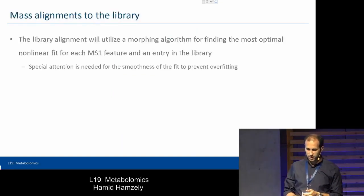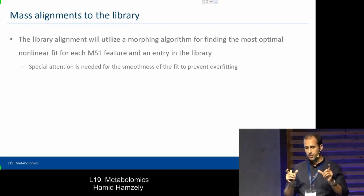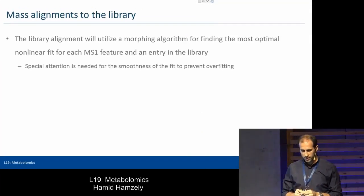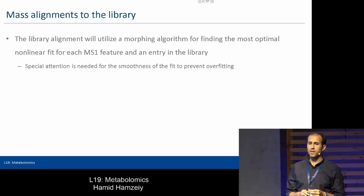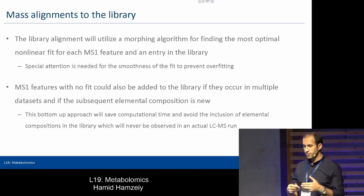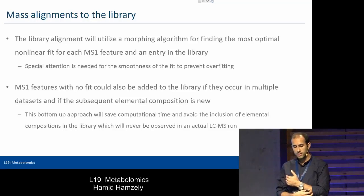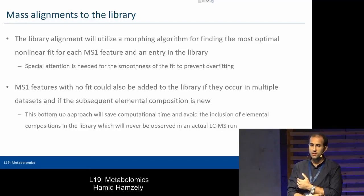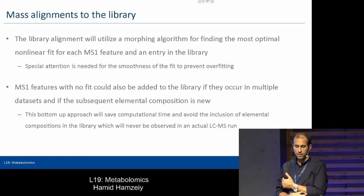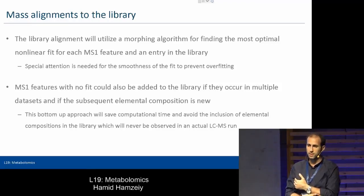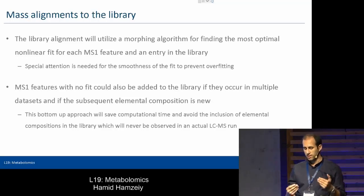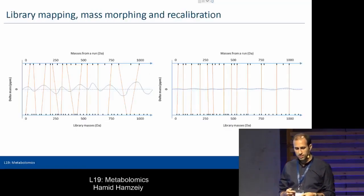After we have the library, we utilize what we call a morphing algorithm. The main thing is that we pay special attention to the smoothness of the fit so we're not overfitting — not identifying things that are not there. This saves a lot of computational time, and we're able to do the identification at the MS1 level without having to rely on MS-MS spectra, which are much more complex in metabolomics. Unlike proteomics, there are many different kinds of bonds that can break in MS-MS, and identifying them is very hard, so we can't have a database search happening there.